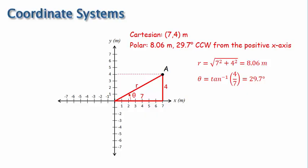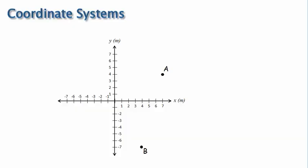By convention, theta is measured counterclockwise from the positive x-axis. Though, as we'll see in the next example, it doesn't need to be. For the next example, let's place location B here. B is located 4 meters on the x-axis and negative 7 meters on the y-axis.